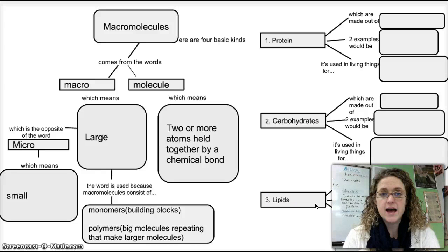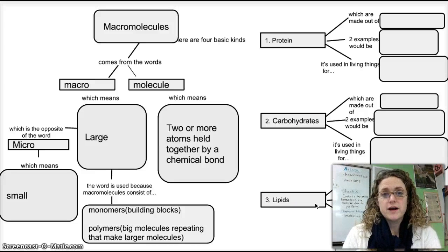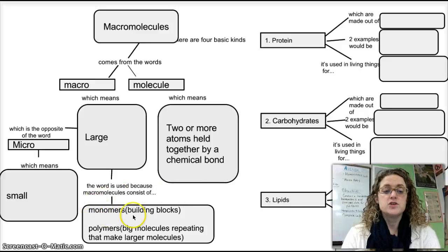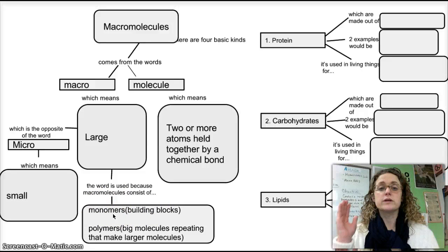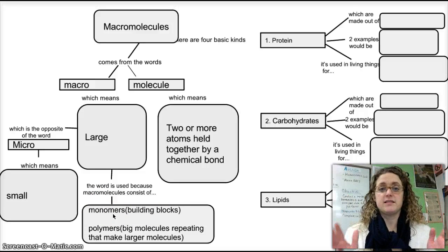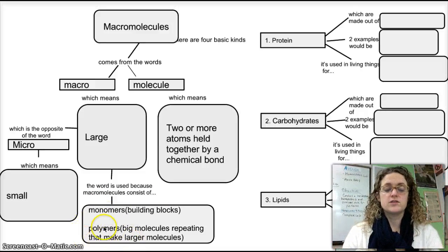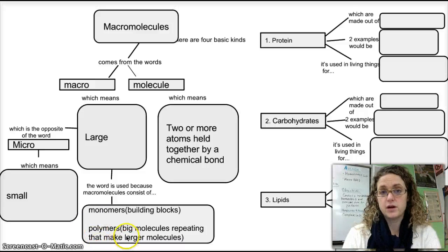You've actually already looked at one very important macromolecule, DNA. DNA is composed of nucleotides, which act as the monomer. And as the nucleotides repeat on both sides of the DNA ladder, you get one large DNA molecule, which is the polymer.